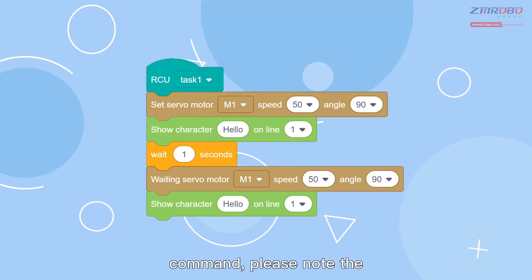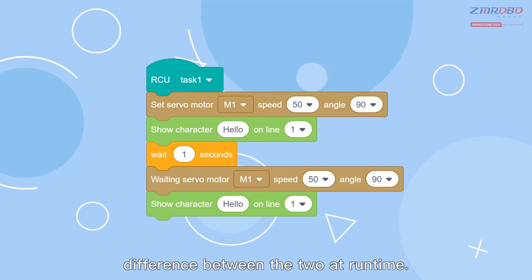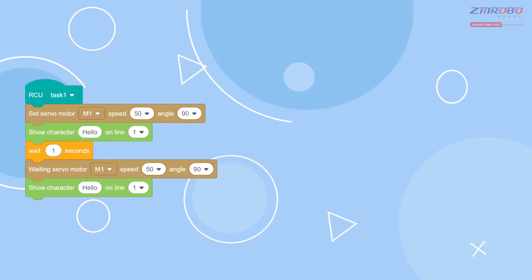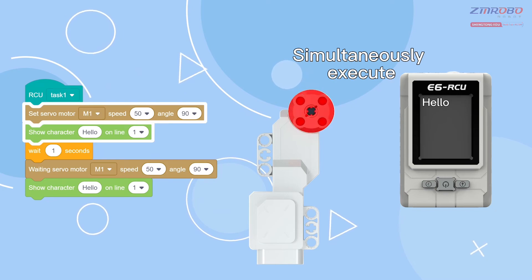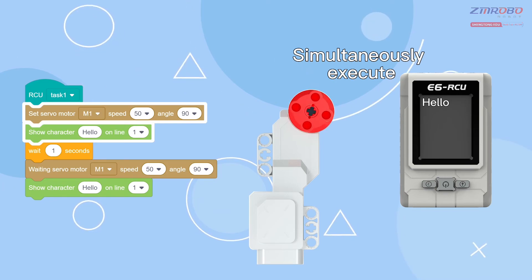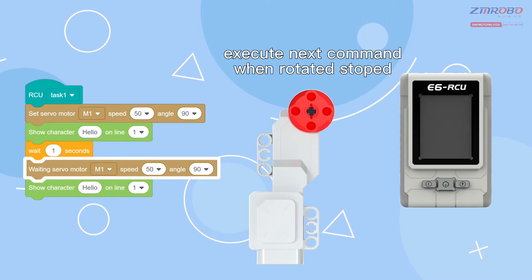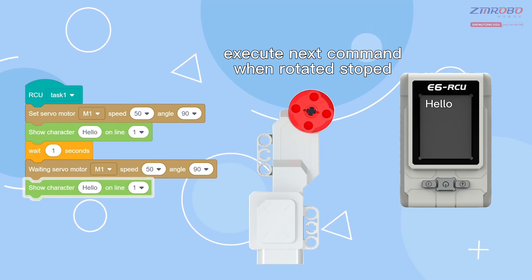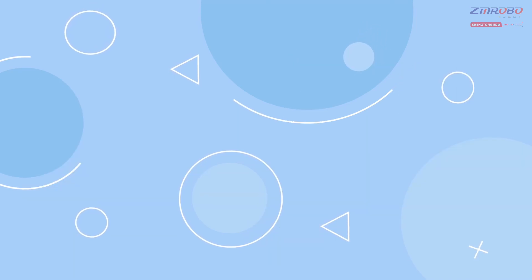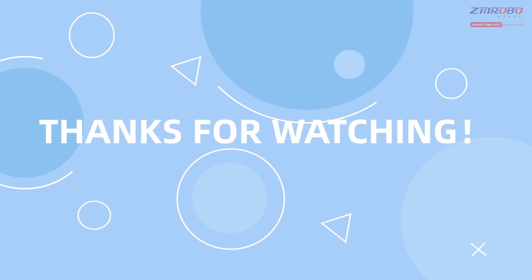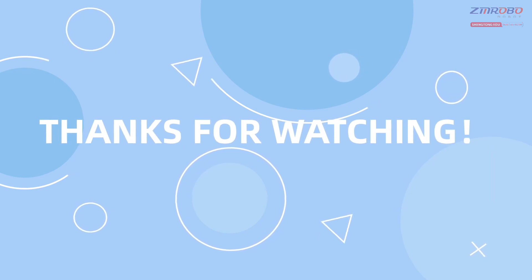Here is a demonstration of a program that contains both a setting servo motor command and a waiting servo motor command — please note the difference between the two at runtime. This concludes the introduction of the motor. Thanks for watching.